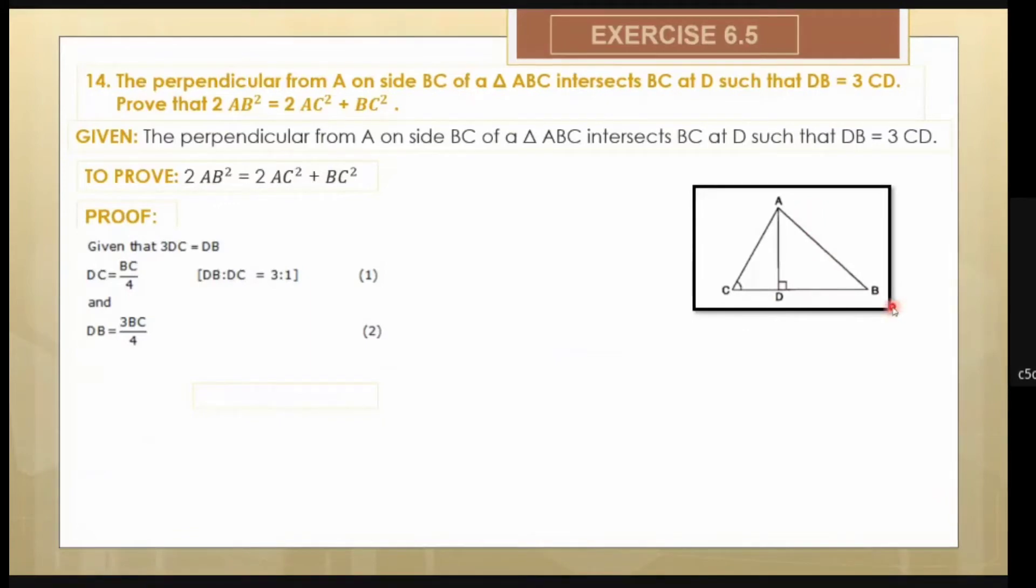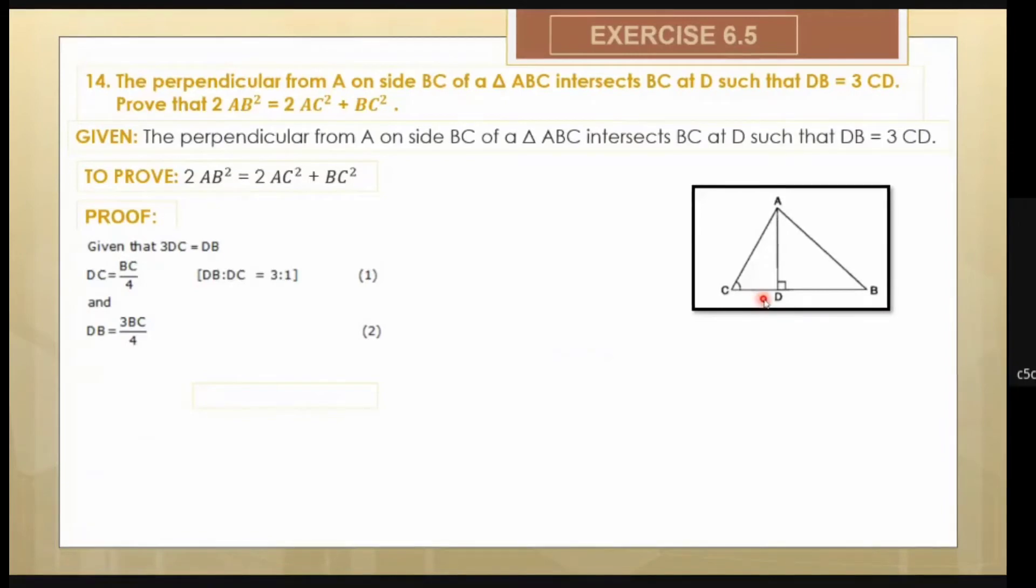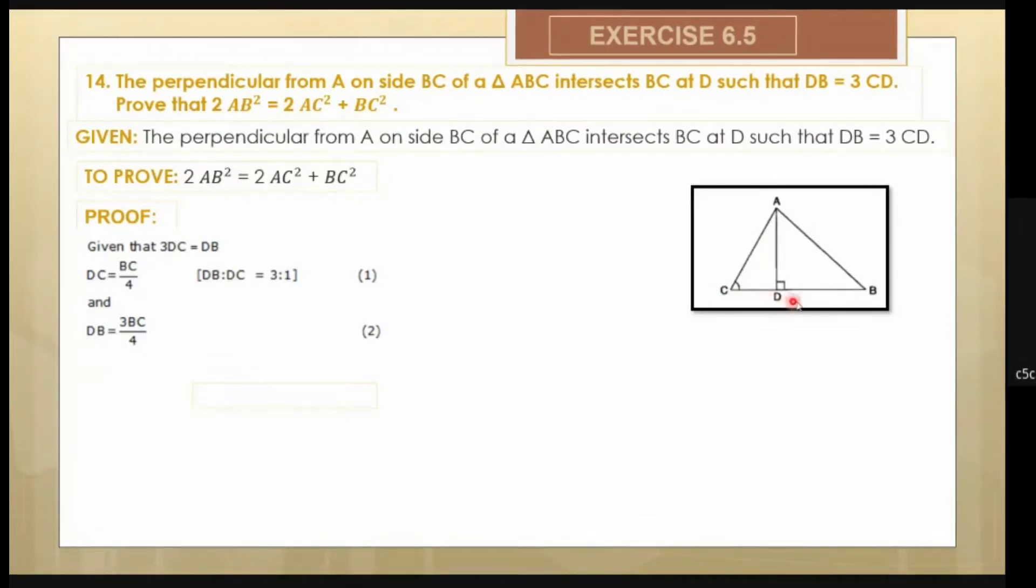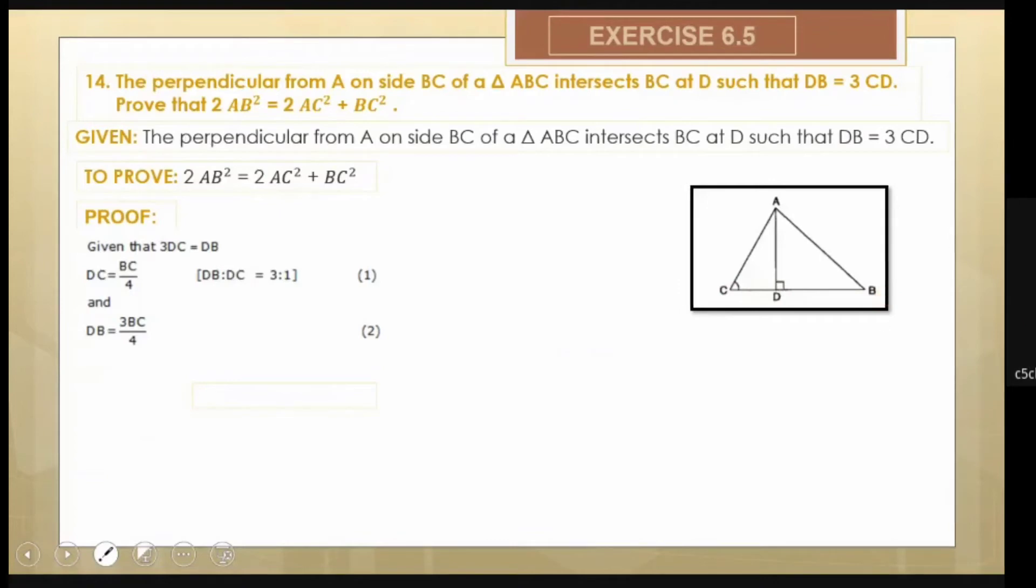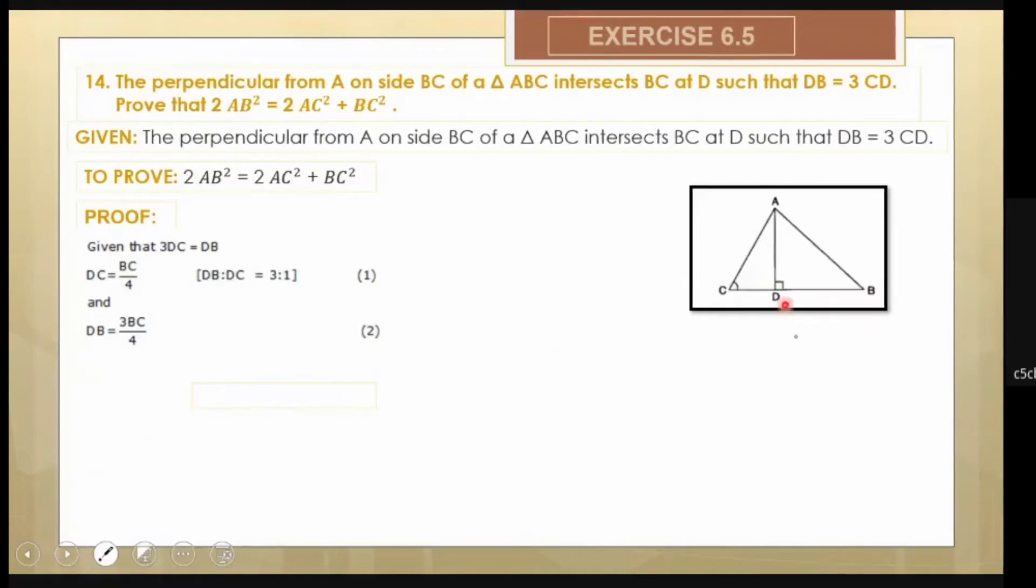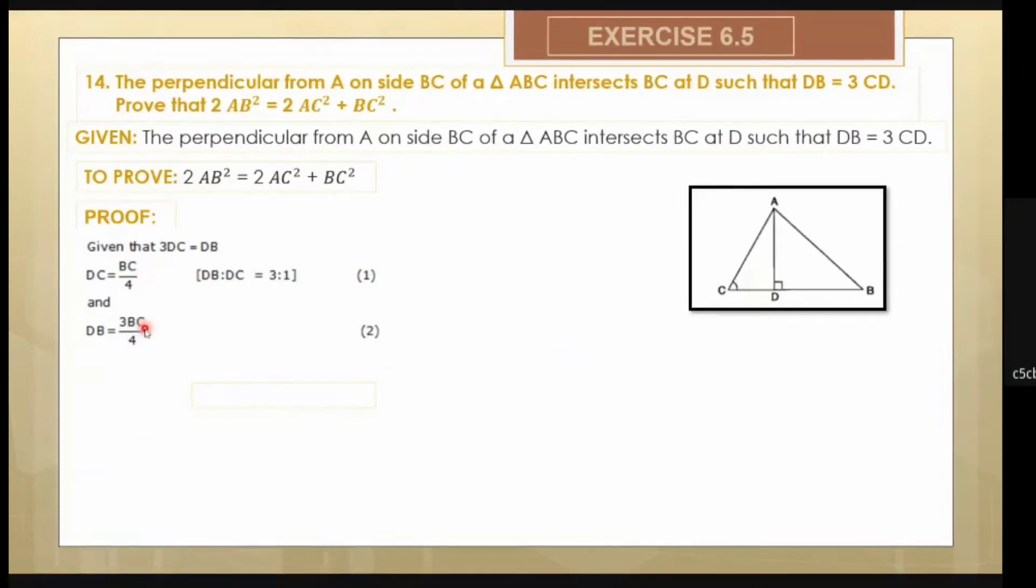So first of all, I have CD is equal to 1/3 of BC. So if I take this CD as x, then BD is equal to 3x, then BC will come out to be 4x. So CD is 1/4 of BC and BD is 3/4 of BC. These are the two important things I have got: DC is 1/4 of BC and BD is 3/4 of BC.